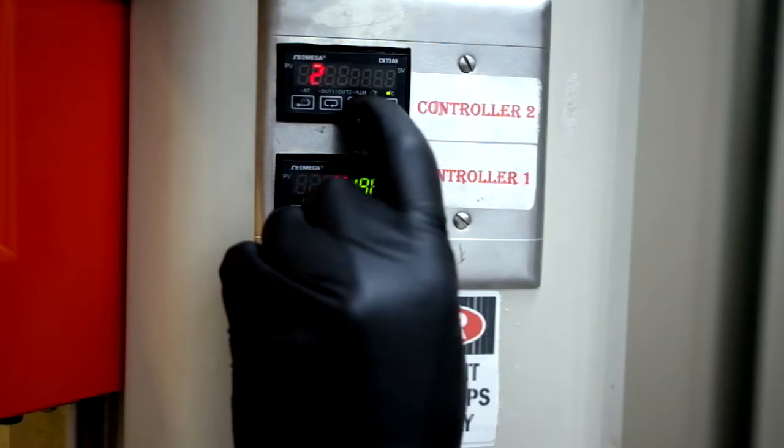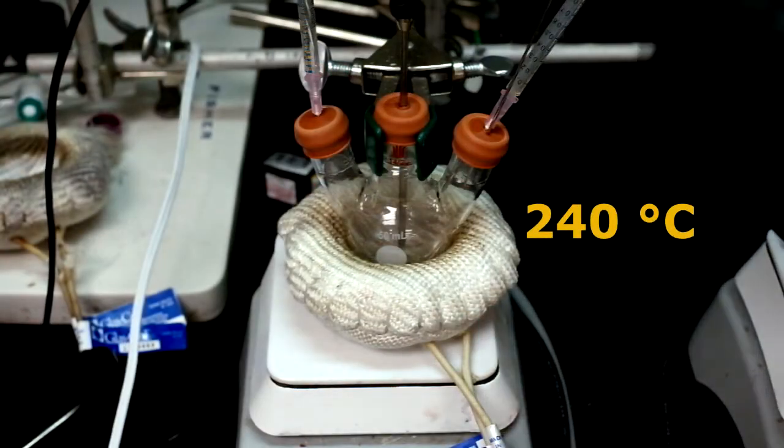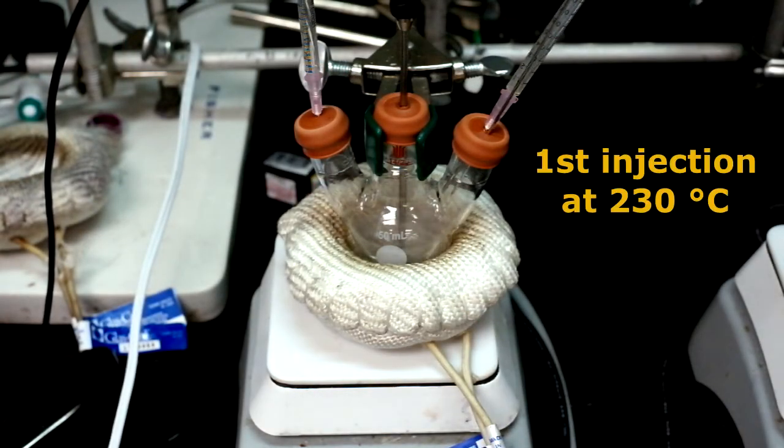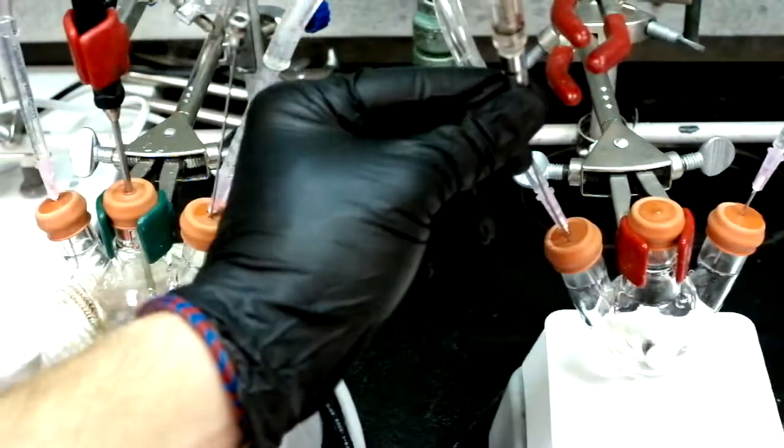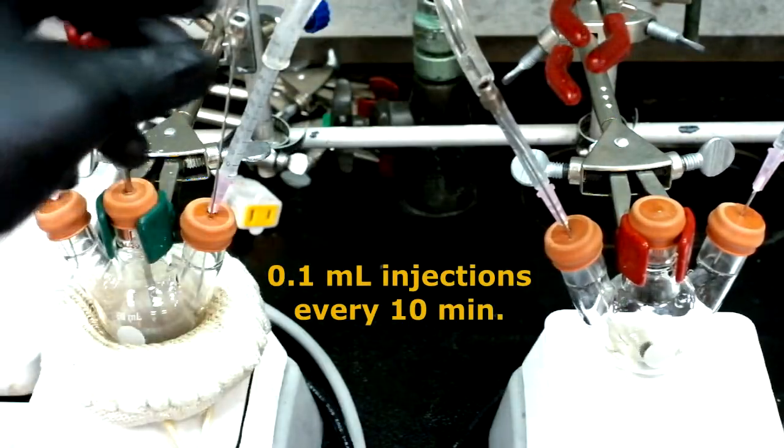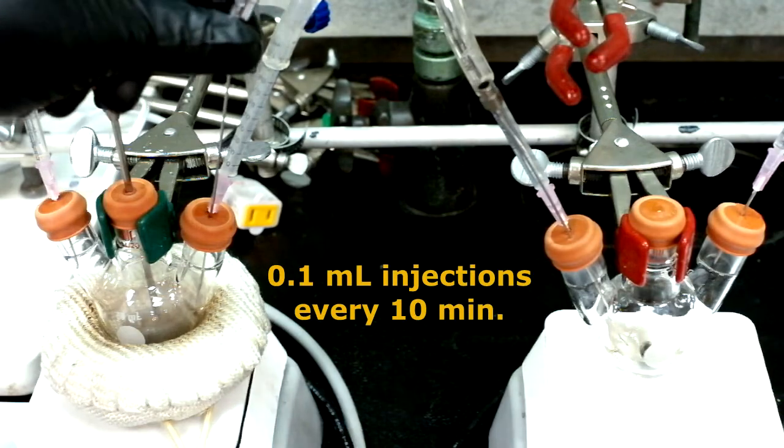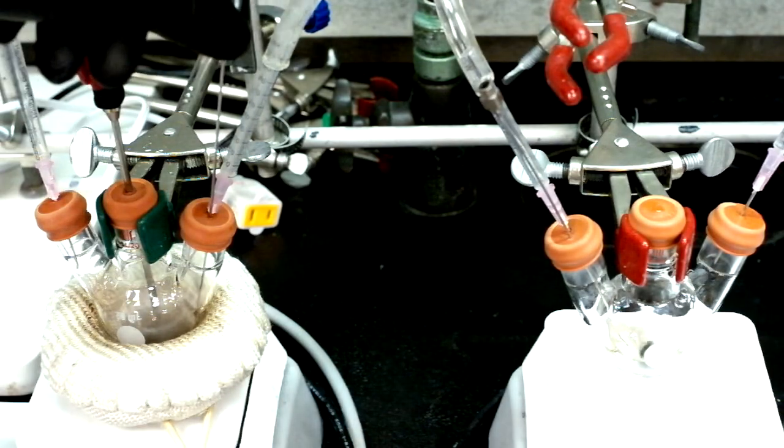Set the temperature of the reaction flask to 240 degrees Celsius, but be aware that the first injection will be done at 230 degrees Celsius. Each injection will be 0.1 ml of the precursor solution and we will do them every 10 minutes after the initial injection.